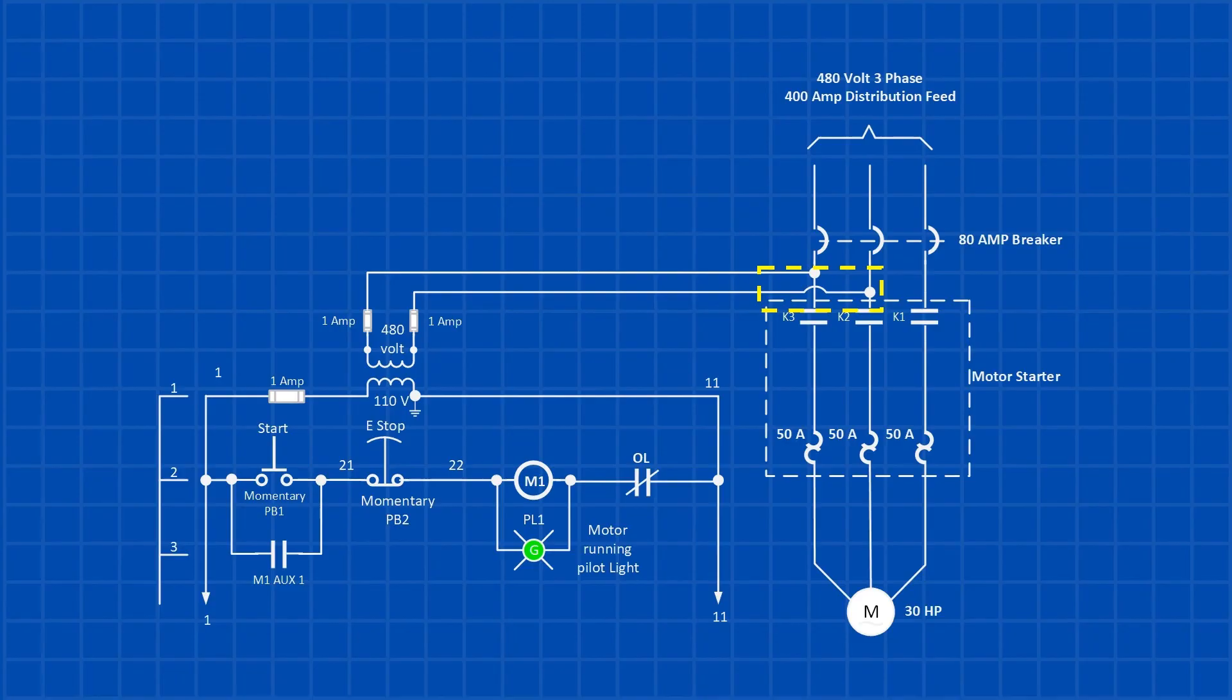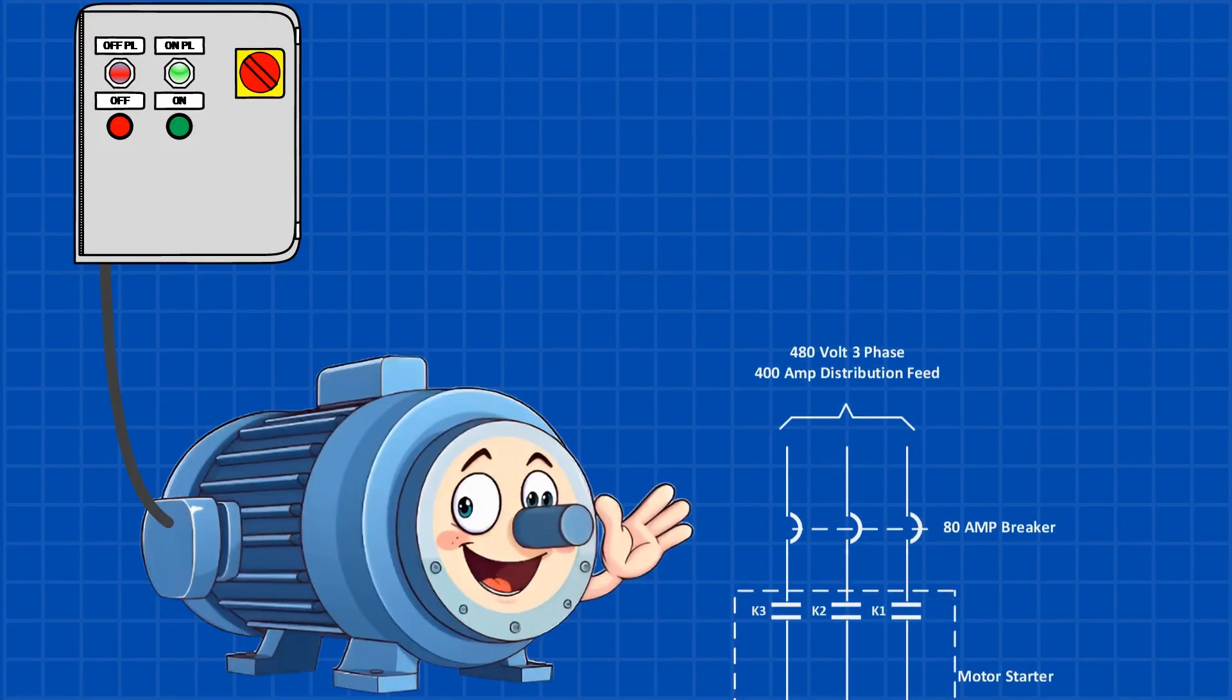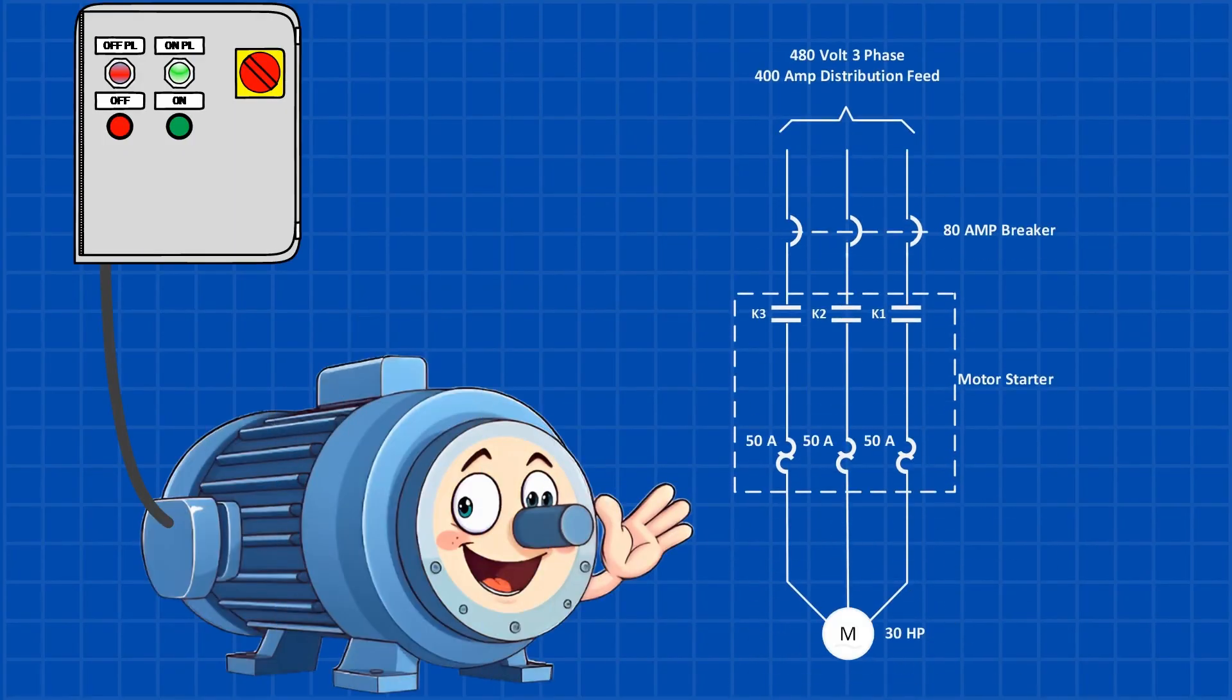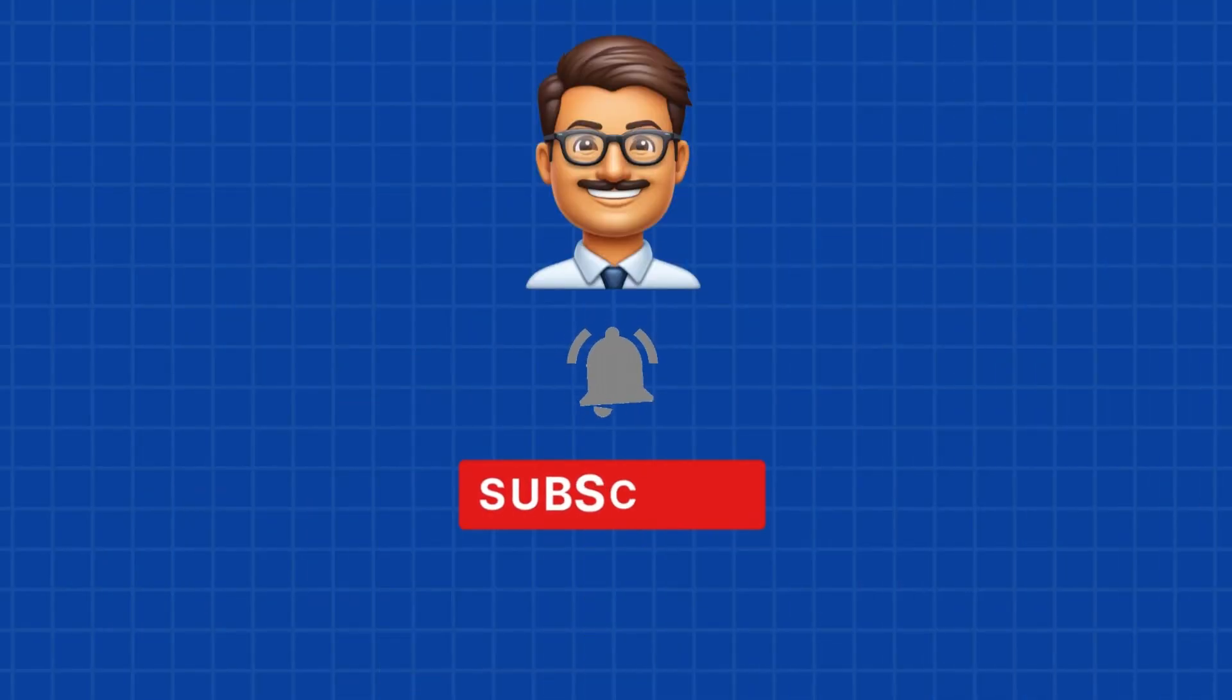And there you have it. We've walked through the components, diagrams, and calculations necessary to set up a motor control system for a 30-horsepower motor, 22kW. Understanding these basics can make a huge difference in building safe and reliable circuits. If you found this video helpful, give it a thumbs up, share it with your colleagues, and don't forget to subscribe for more in-depth electrical tutorials. If you have any questions about this motor control circuit, feel free to ask them in the comments. Thanks for watching, and I'll catch you in the next one.